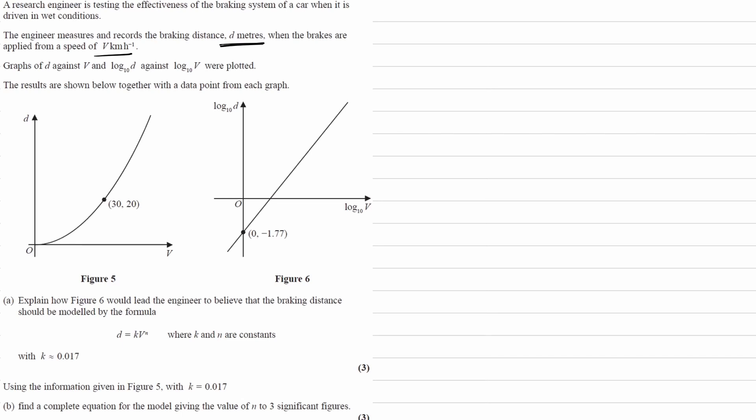And the results are shown below with a data point from each graph. Okay, so we're given two data points as well. Explain how Figure 6 would lead the engineer to believe that the braking distance should be modeled by the formula d equals kv to the power of n, with k being 0.017.